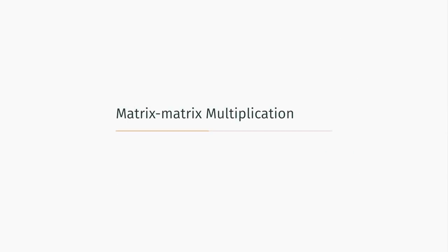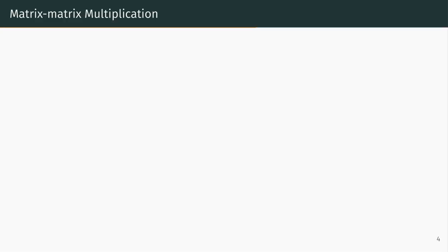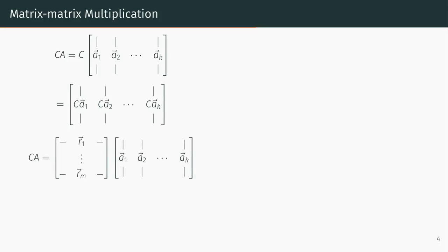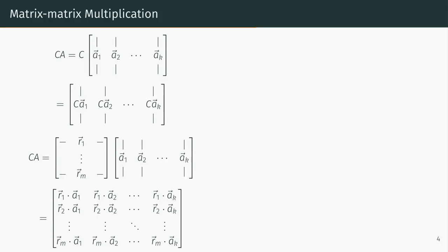We will now discuss matrix-matrix multiplication. Matrix-matrix multiplication can be thought of as repeated applications of matrix-vector multiplication. Consider the matrix C times the matrix A. If the vectors A1 through AK represent the columns of the matrix A, then the matrix product C times A is the matrix whose columns are C times A1, C times A2, and all the way down to C times AK. We can further break this down by imagining that the rows of the matrix C are vectors R1 through Rm. Using the row interpretation of matrix-vector multiplication, the result of C times A is the matrix whose entries are various dot products of the R vectors and the A vectors.